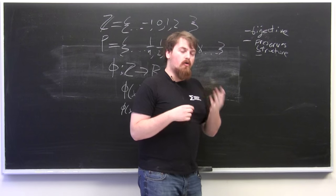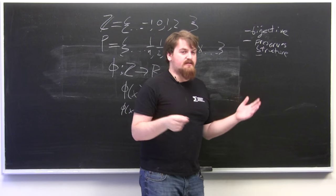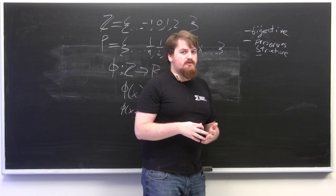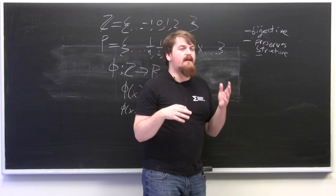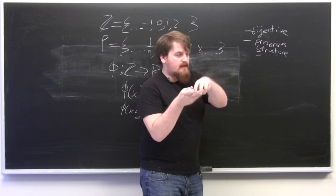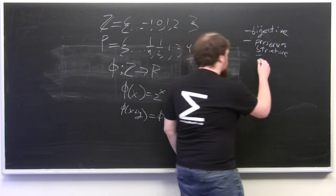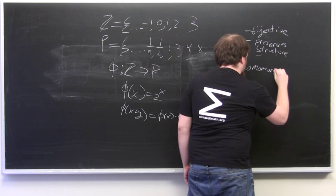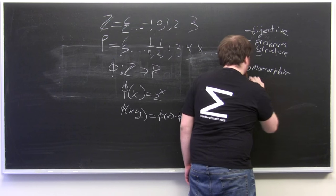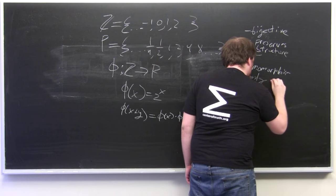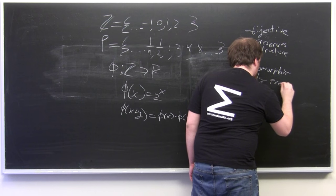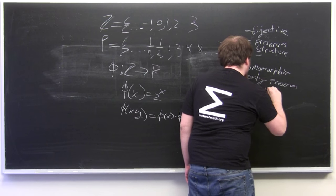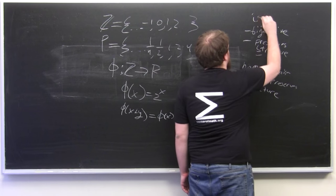All they need to do is preserve structure. So a homomorphism doesn't need to map to the whole of the range group, or the co-domain group rather, and it doesn't need to send every element. It can send two elements to the same element. It doesn't need to be one to one.